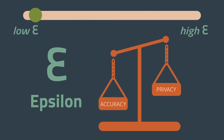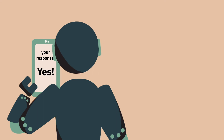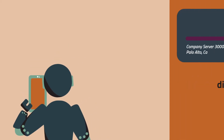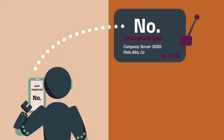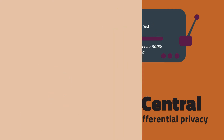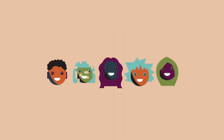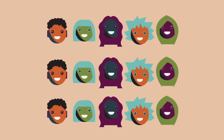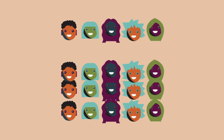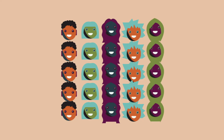When noise is added on a user's device, it's known as local differential privacy. When the noise is added after the data has been collected, it's called central differential privacy. With this method, the more an organization queries their data set, the more information is leaked about their individual records. The central model requires constantly searching for new sources of data to maintain high levels of privacy.